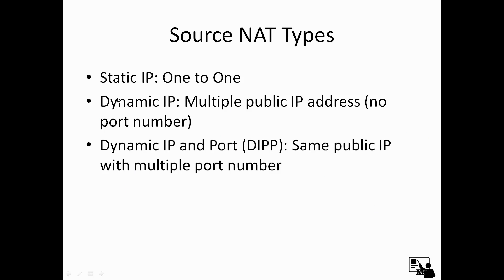There are three types of source NATing: static, dynamic, and dynamic IP and port. In static, we do one-to-one translation — for each internal host you have to define a public IP address, so in practical scenarios we never use static source NATing. In dynamic IP, we use multiple public IP addresses to translate the source IP. In dynamic IP and port, we need only a single public IP address and use different ports for each internal user.